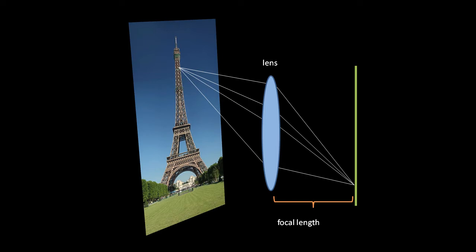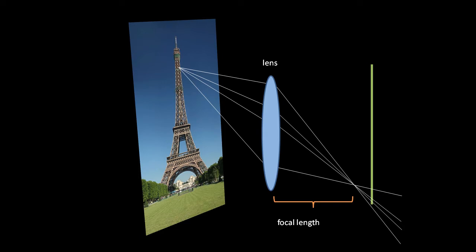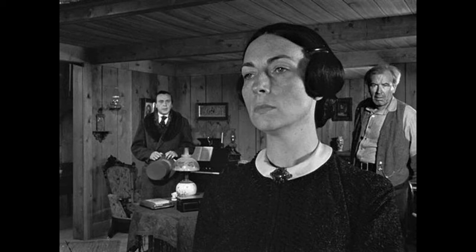For a given lens, the proper distance from the lens to the film is called the focal length. If we moved the film closer or further away, the rays of light from one point in the scene wouldn't converge onto the same point, producing a blurry image. A related issue is that a lens cannot properly focus points at all distances at once, producing depth of field — objects in the foreground or background may be blurry. In our 3D rendering, we will not account for depth of field; effectively, our images will have infinite depth of field.